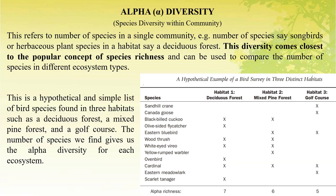This is a hypothetical and simple list of bird species found in three distinct habitats: a deciduous forest, a mixed pine forest, and a Gulf Coast. The number of species we find gives us the alpha diversity for each ecosystem. For example, for habitat one, seven bird species are found, so the alpha diversity is seven. Similarly, for habitat two, six species are found, so the alpha diversity is six.